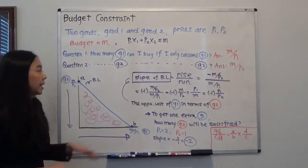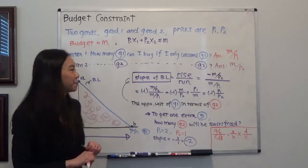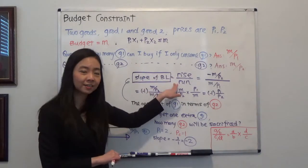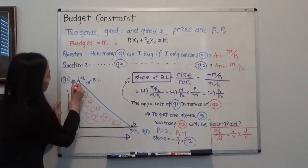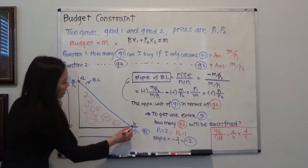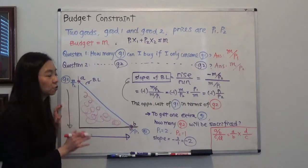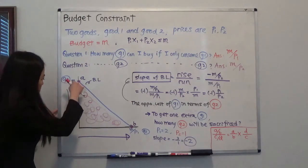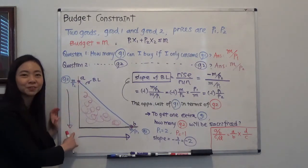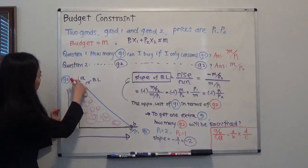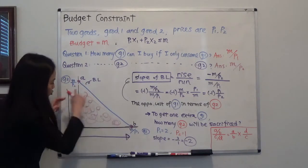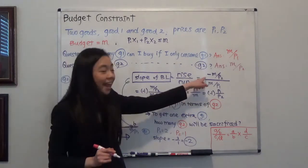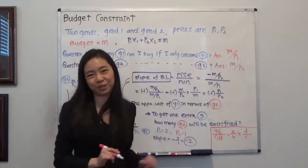We can find the slope of the budget line. The slope of budget line is rise over the run. Suppose we're going from point A to point B. Then what is the rise and what is the run? We know that the rise is here, we're actually going down from M over P2 to zero. That's the rise, actually going down. So we know the rise is actually negative M over P2.